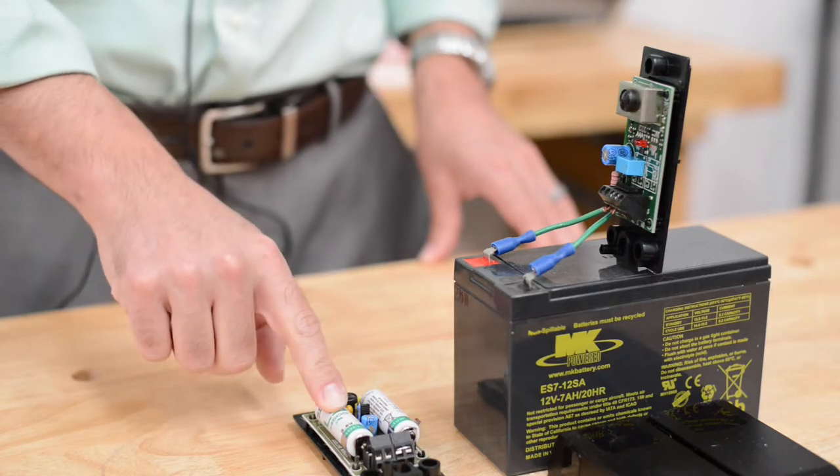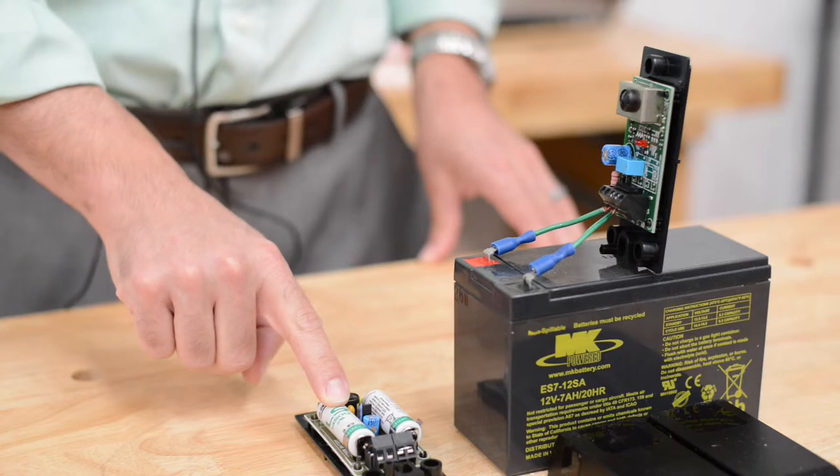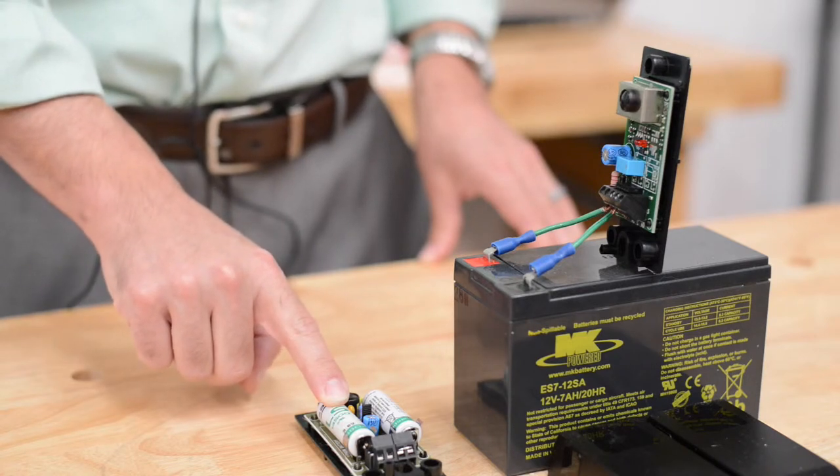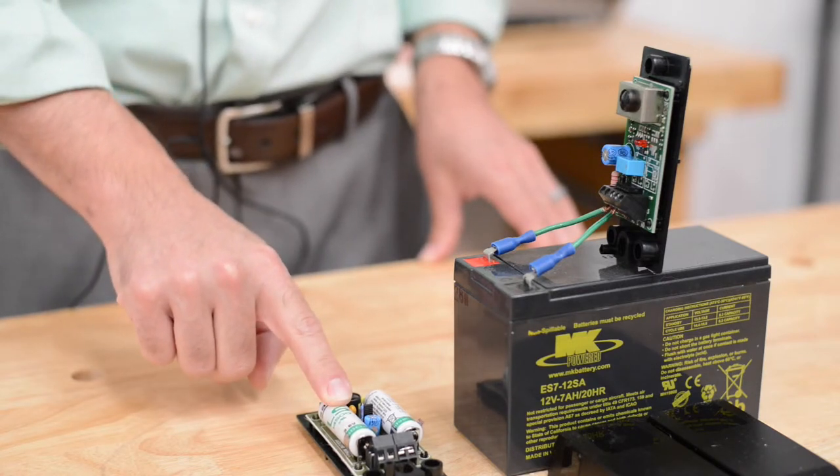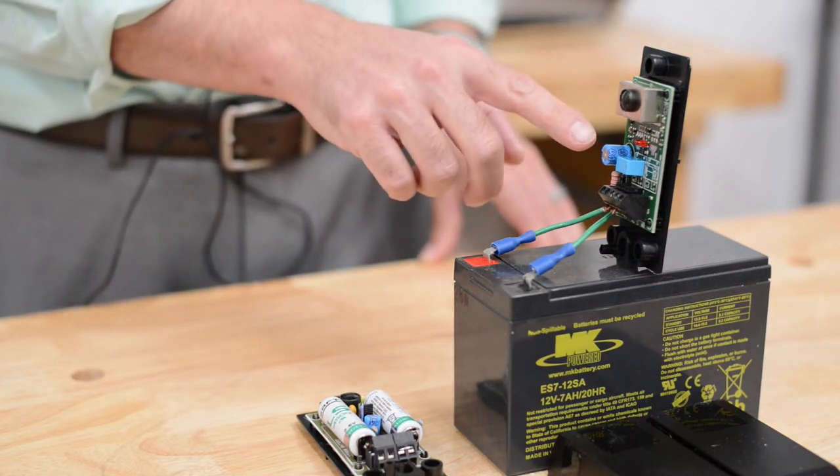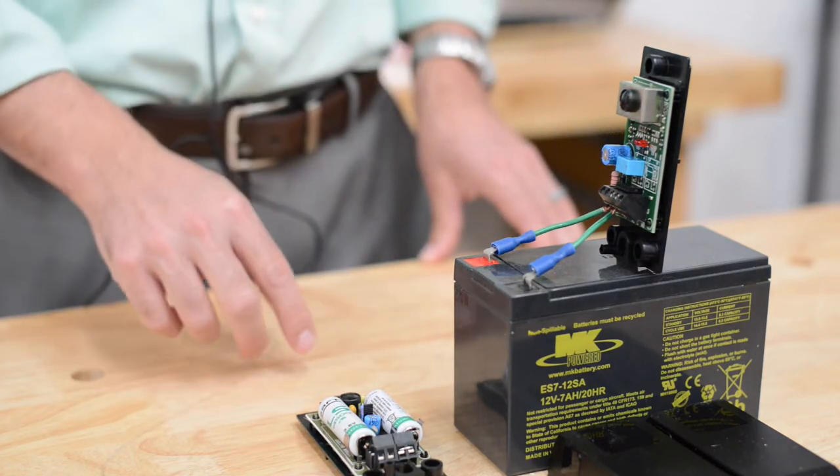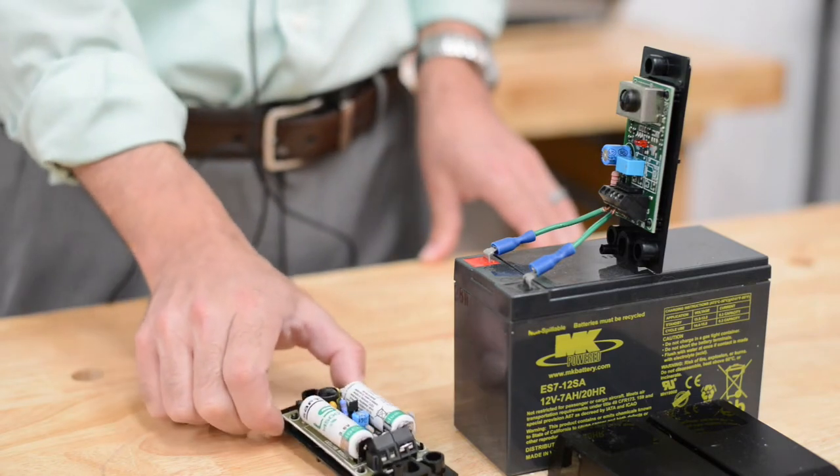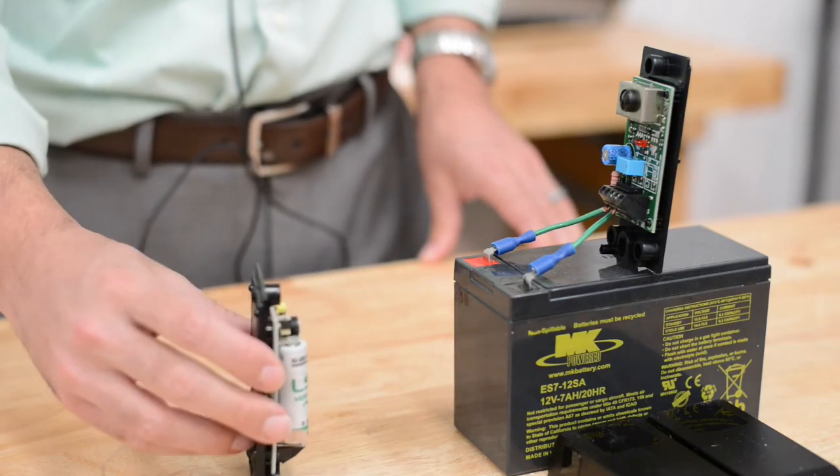On the secondary side, you must use lithium 3.6 volt AA batteries. You cannot use standard AA batteries. When you attach power to the primary side, the light will not be on. There will be no indication of incoming power until the secondary side is lined up.